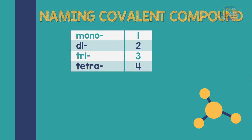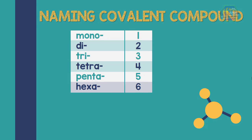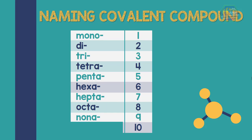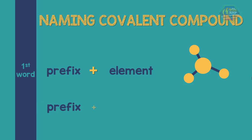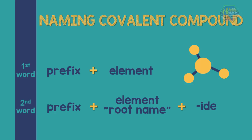In naming the covalent compound, it uses Greek numerical prefixes: mono, di, tri, tetra, penta, hexa, hepta, octa, nona, and deca. The general structure for naming is: prefix plus element for the first word, and prefix plus element root name plus -ide for the second word.